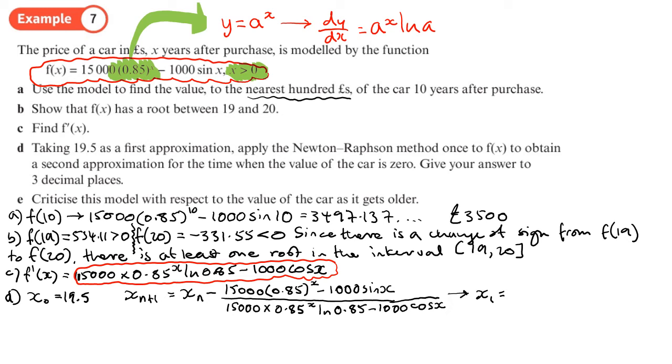So that gives me 19.5 to eight. Give your answer to three decimal places, so 19.528. So that seems like about halfway through the 19th year.